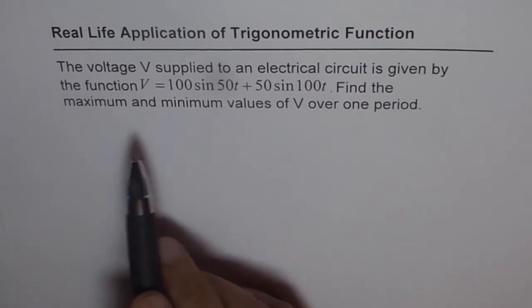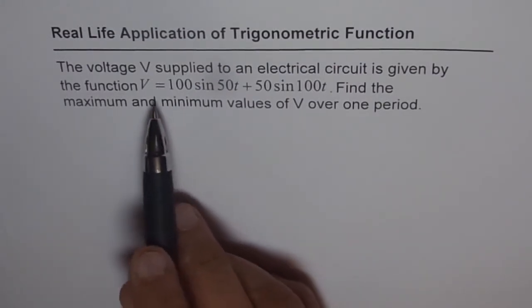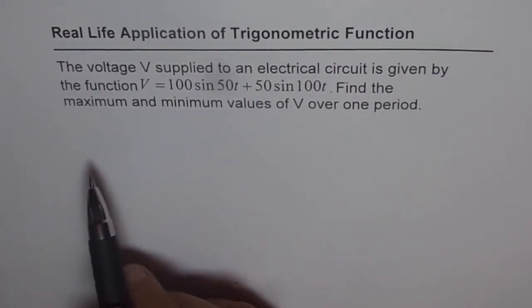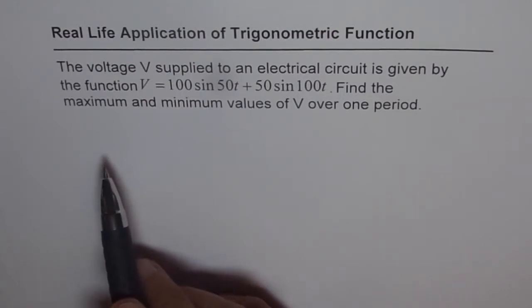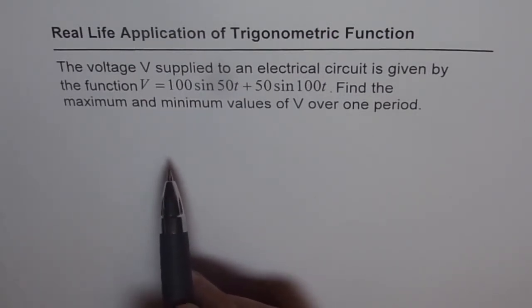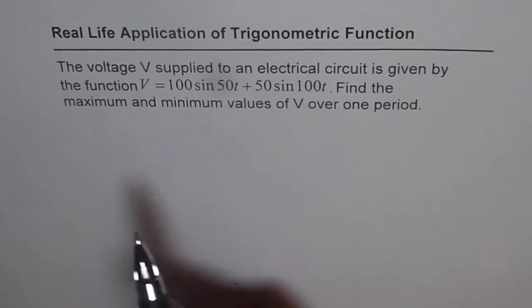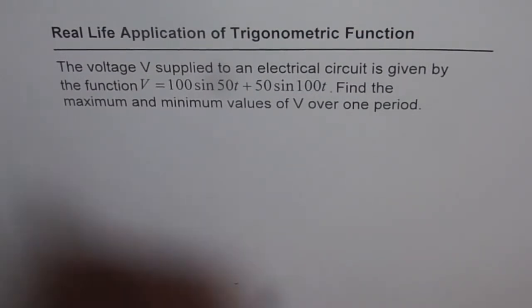To find maximum and minimum, we need to find the first derivative and then check whether it is changing from increasing to decreasing or from decreasing to increasing. Two steps and then we should get our answer.